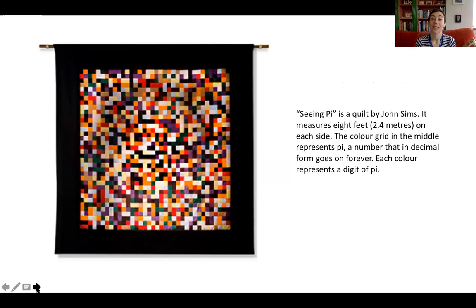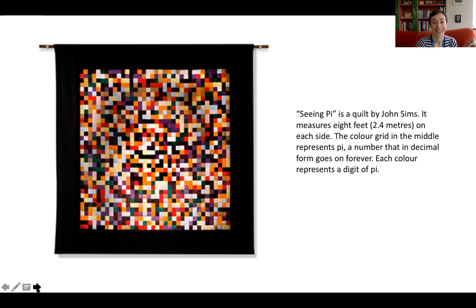This is another way of representing a huge number. It's called 'Seeing Pi' and it's a quilt by an artist called John Sims. It measures eight feet on each side, and the color grid in the middle represents pi — a number that in decimal form goes on forever. Each color represents a digit of pi, so maybe orange might be two, and each time two appears it's that color. You could have a quilt that goes on forever and ever, which is what's interesting about this.